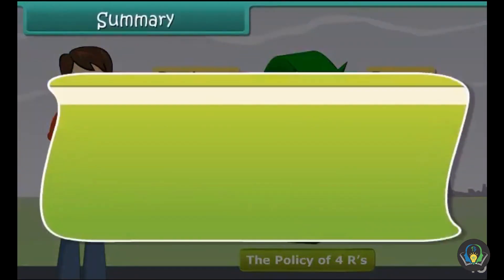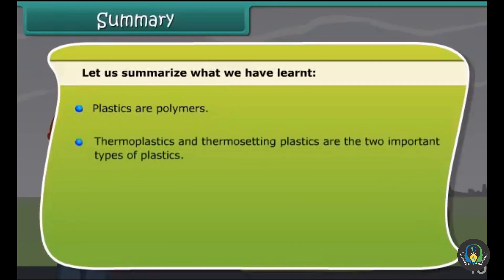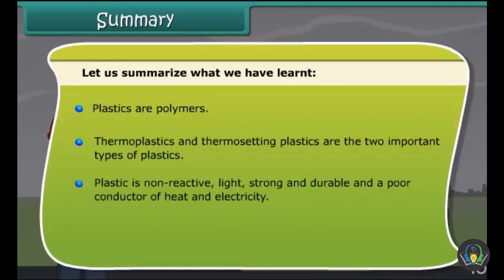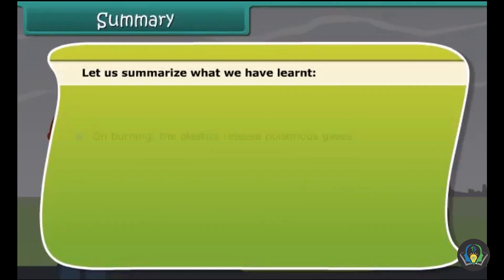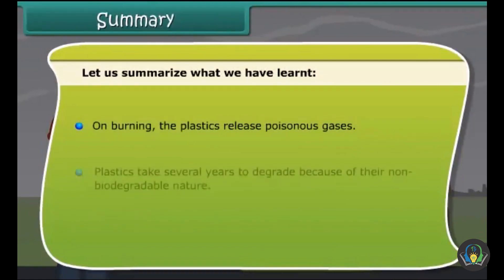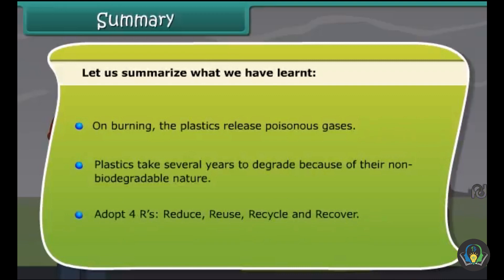Let's summarize what we have learnt. Plastics are polymers. Thermoplastics and thermosetting plastics are two important types of plastics. Plastic is non-reactive, light, strong, durable and a poor conductor of heat and electricity. Plastics find extensive use in the healthcare industry, building materials and pipelines. On burning, plastics release poisonous gases. Plastics take several years to degrade because of their non-biodegradable nature. Adopt the 4R principle: reduce, reuse, recycle and recover.